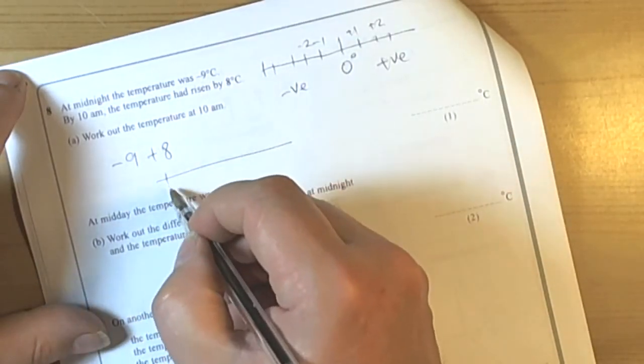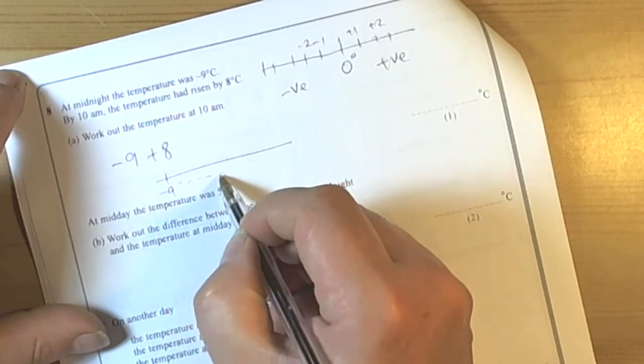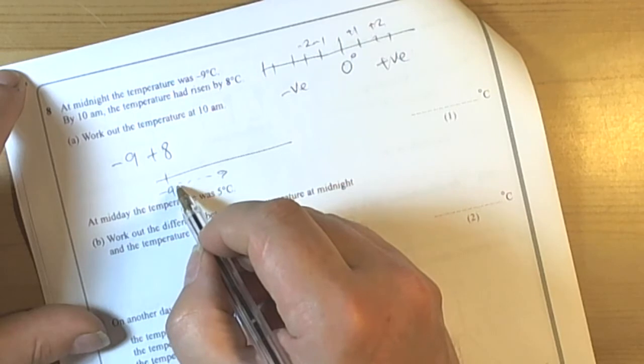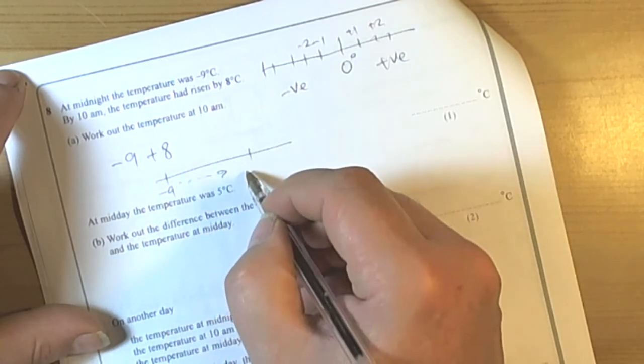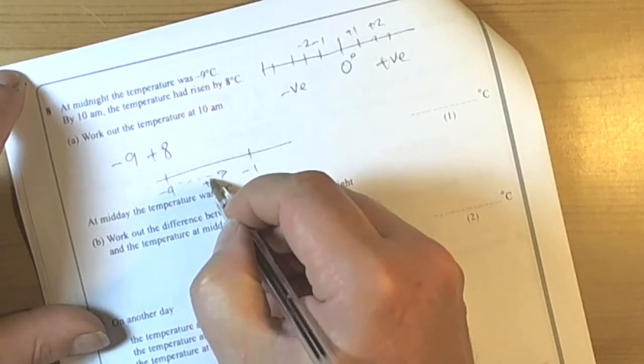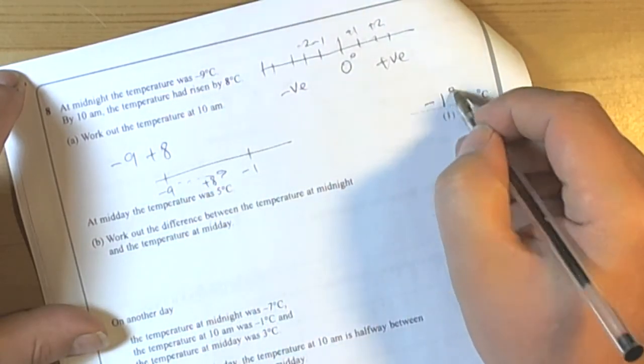So if we think about how a number line works we'd be starting at negative 9 and then we'd be adding so we'd be getting bigger. So we increase by going along. So we count along 8 spaces and we get to minus 1. So the temperature here will be minus 1 degrees C.